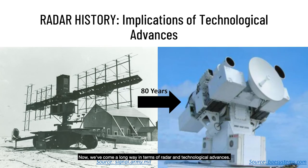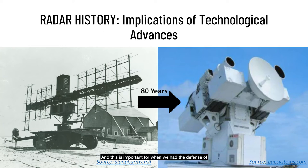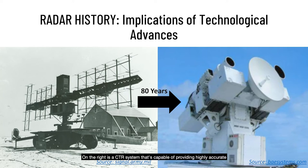We've come a long way in terms of radar and technological advances. On the left, we have a shortwave radar that could detect objects only about seven miles away — important for the defense of Britain, when radar was really developed for the detection of airborne vehicles. On the right is a CTR system capable of providing highly accurate tracking data on non-cooperative targets, including rockets, missiles, artillery, and aircraft.